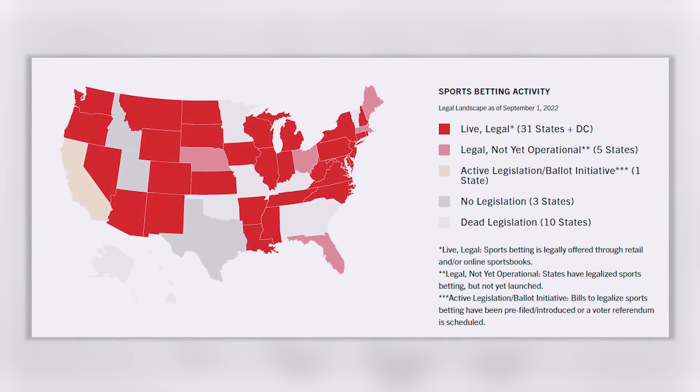People who are really committed to this will travel across multiple states in order to open up dozens of sports books. Each state will have its own app, so you can open up MGM in Pennsylvania, New York, and New Jersey and you'll get free bets from all three — that's thousands of dollars in free bets that you can then wash. Now I'm not saying you need to do all that, but if you're a truck driver who drives across multiple states all the time, this is not such a bad idea.